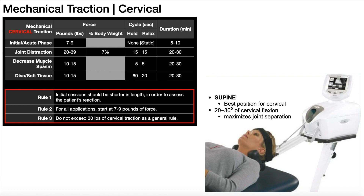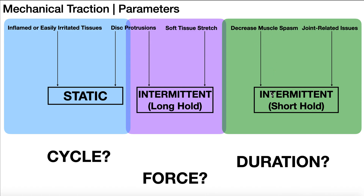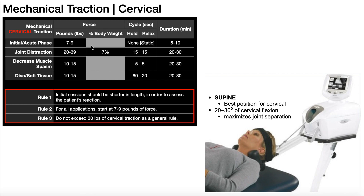For decreasing muscle spasm — which is intermittent short hold — we would use anywhere between 10 and 15 pounds of force. The hold and the relax are both going to be five seconds: five seconds on, five seconds off, with a treatment duration of 20 to 30 minutes.